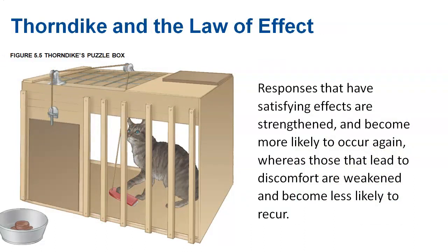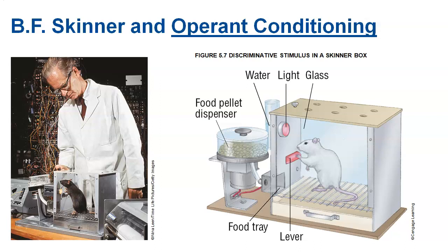Thorndike is a name you'll see on the final exam. Many people forget about Thorndike because of the person we're about to discuss. Thorndike came up with the law of effect — if something good happens after you do something, you're more likely to do it; if something bad happens, you're less likely. This was then taken further by Skinner, who came up with operant conditioning. Remember: Thorndike is the law of effect, while Skinner is operant conditioning.